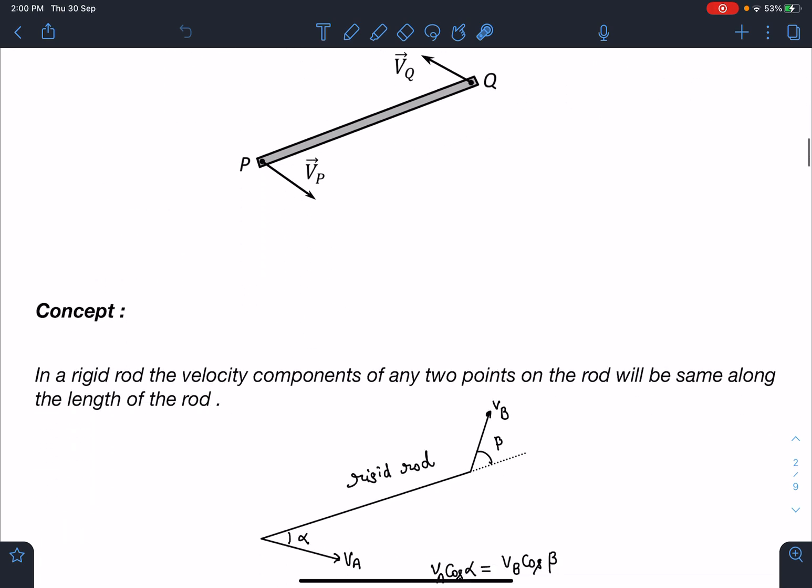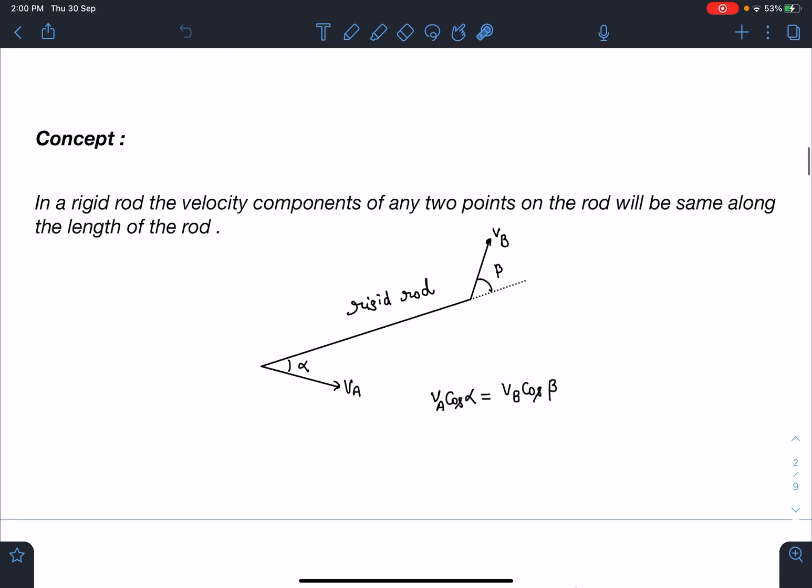Let's discuss the concept part of this problem. In a rigid rod the velocity component of any two points on the rod will be same along the length of the rod. So I can write Va cos α = Vb cos β and it is a rigid rod.